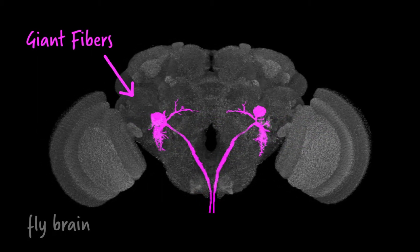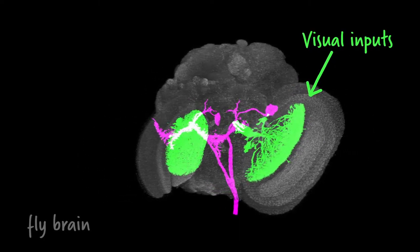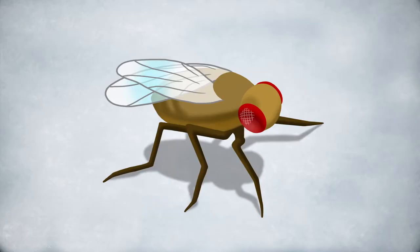In this study, we asked what visual features are transmitted to the giant fibers when a predator attacks, and how does integration of these features dictate when the giant fibers spike and so ultimately determine how the fly behaves?